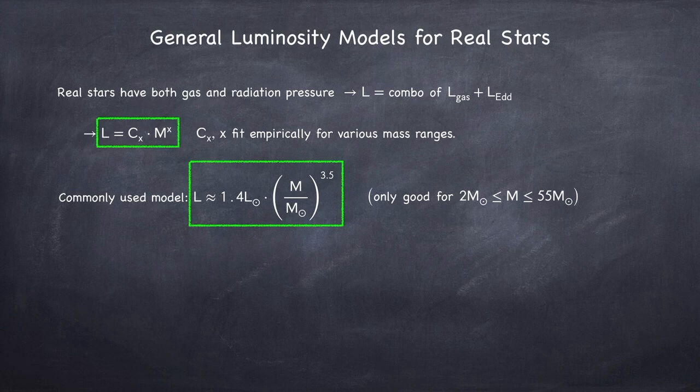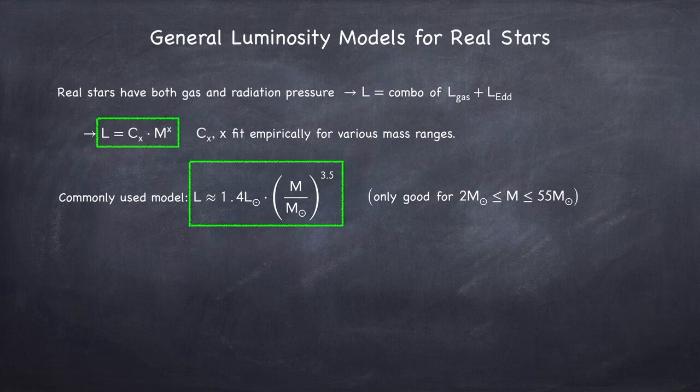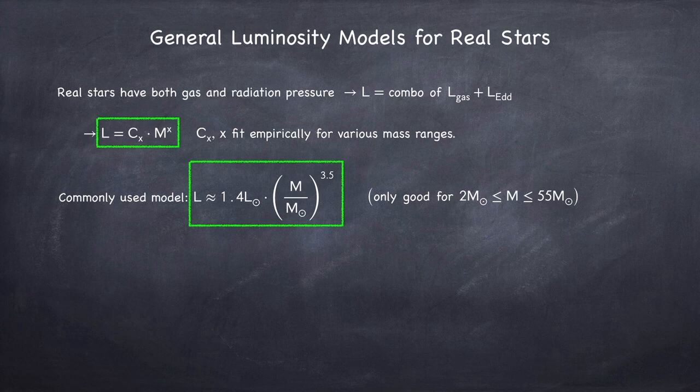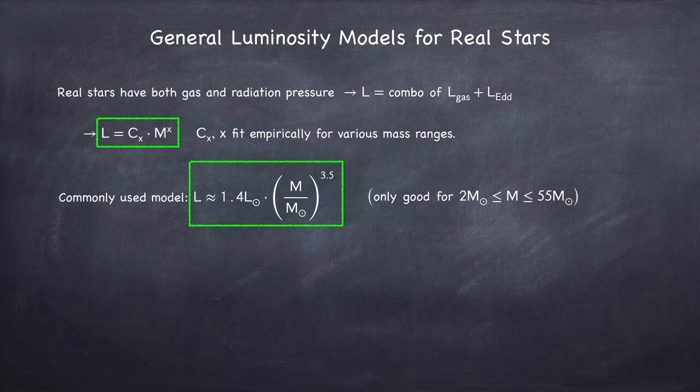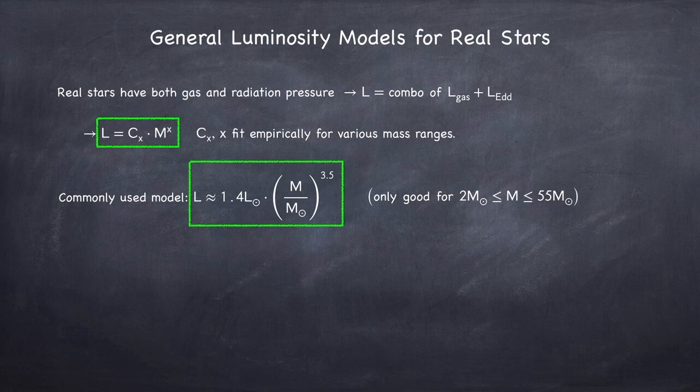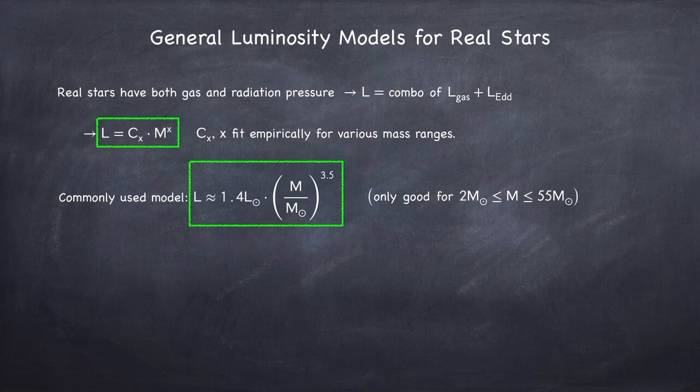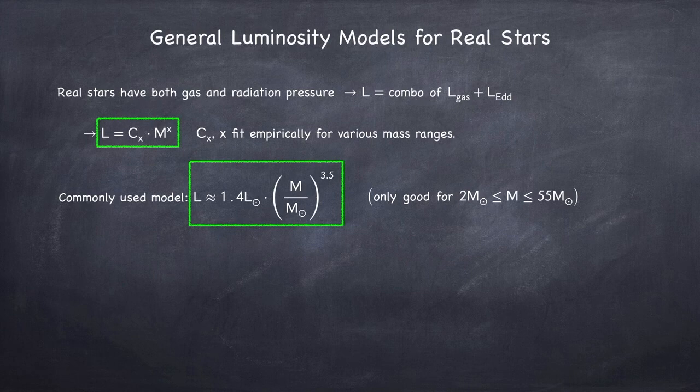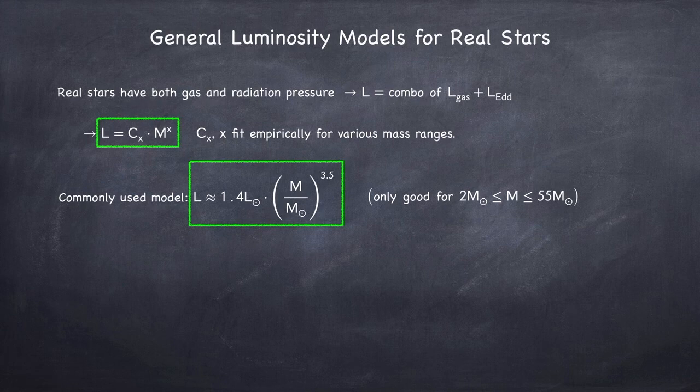The reason this is probably the most commonly used model is that it covers a large range of star masses, and most stars will fall into that range. If you go outside of that range, you have to change your constant c sub x, and you have to change the exponent corresponding to it. So, for example, if we go below this range, we show that the exponent should be 3. And if we go to extremely massive stars that are entirely radiation dominated, we know the exponent should be 1. But for a star to be entirely radiation dominated, it has to be very massive. When we look at internal structure, we'll derive the relationship between how much gas and radiation pressure there is for a given star mass.